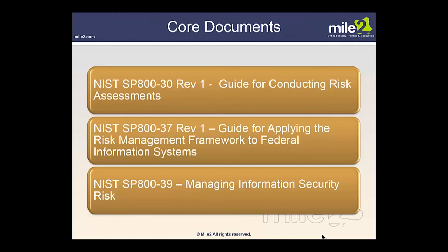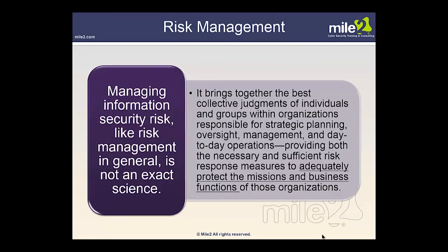As we review risk management, the core documents we'll address are: NIST Special Publication 800-30 Revision 1 — Guide for Conducting Risk Assessments; NIST Special Publication 800-37 Revision 1 — Guide for Applying the Risk Management Framework to Federal Information Systems; and NIST Special Publication 800-39 — Managing Information Security Risk. Managing information security risk, like risk management in general, is not an exact science. It brings together the best collective judgments from people within your organization for strategic planning, oversight, management, and day-to-day operations.